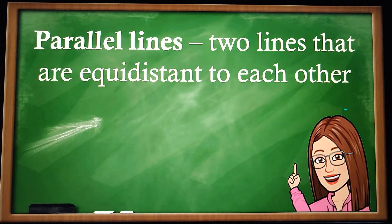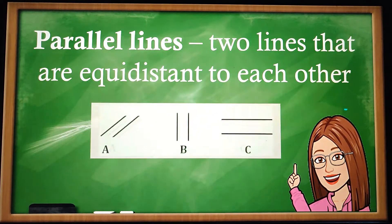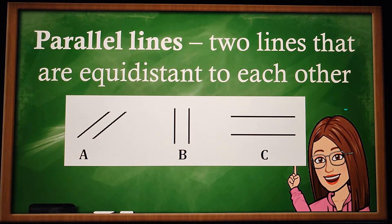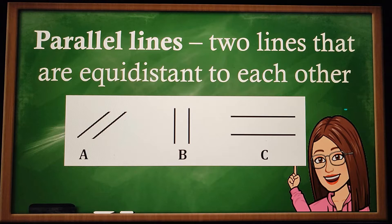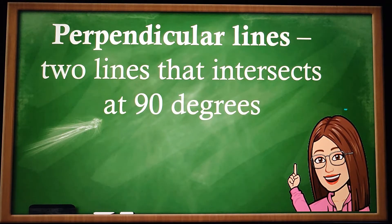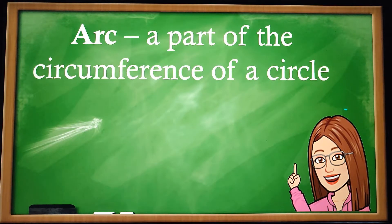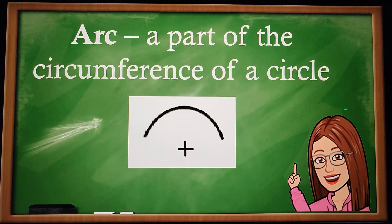Parallel lines are two lines that are equidistant to each other — for example, figures A, B, and C. They can be inclined, vertical, or horizontal lines, as long as they are equidistant. The distance from one endpoint to the other is the same. Perpendicular lines are two lines that intersect at 90 degrees. An arc is a part of the circumference of a circle — any part on the circumference.